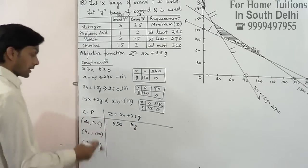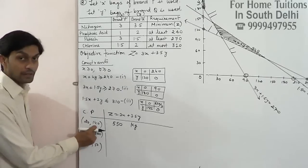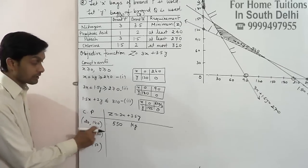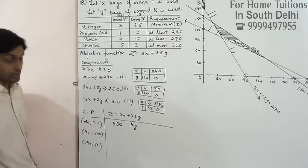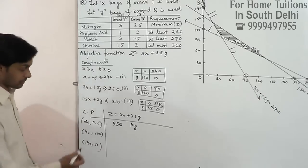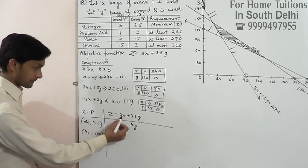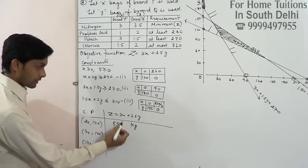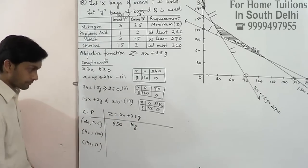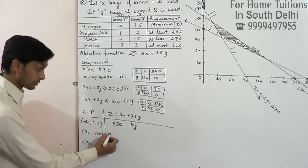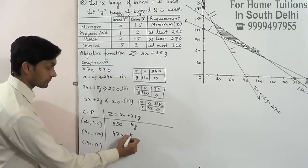This is how it will be. It will be 50 kg. This is how it will be, it will be 50 kg. We will have minimum nitrogen. Charges: 3x20, 4x20, 4x70. 70 kg nitrogen.